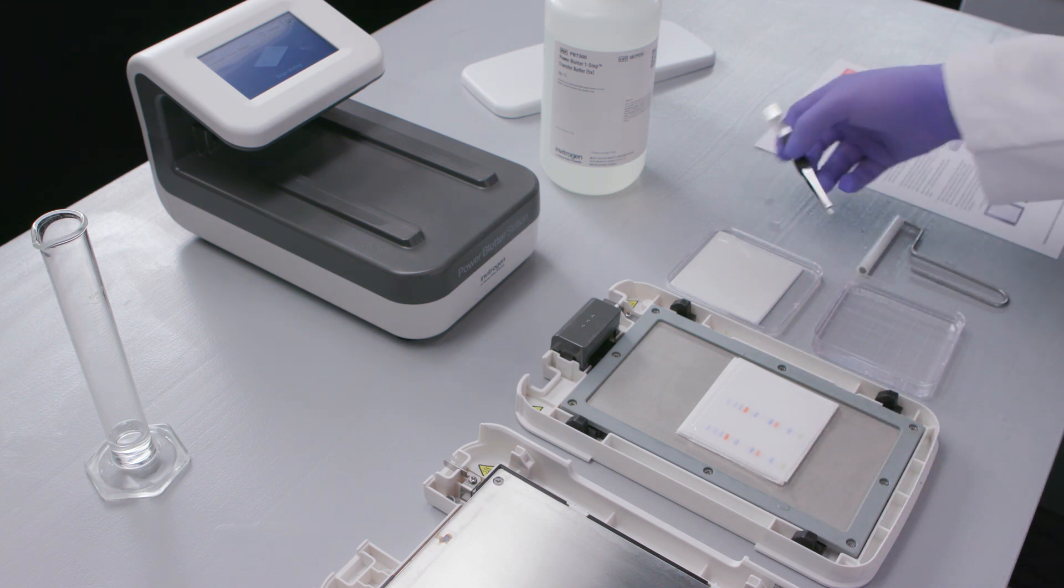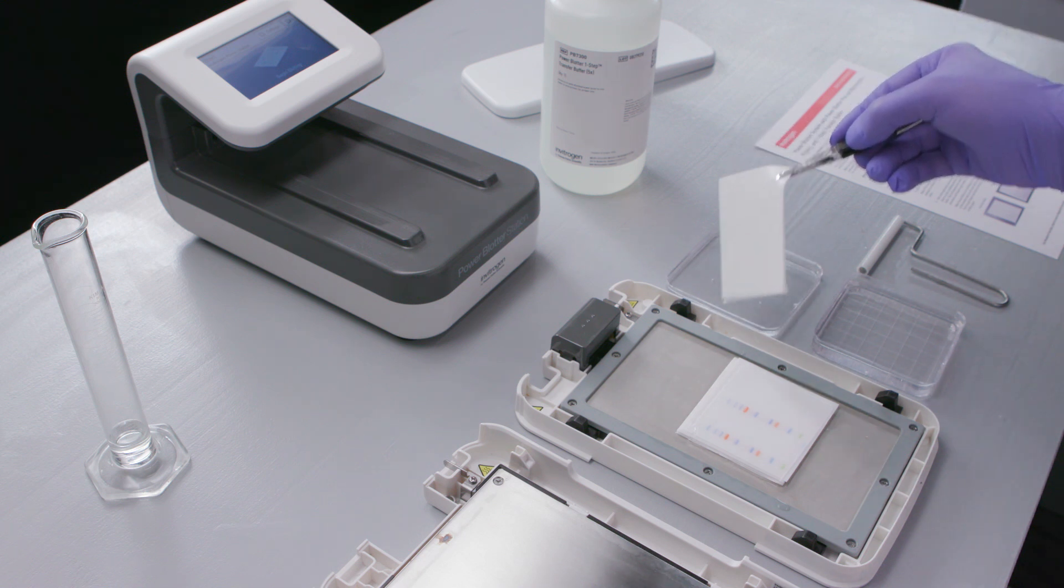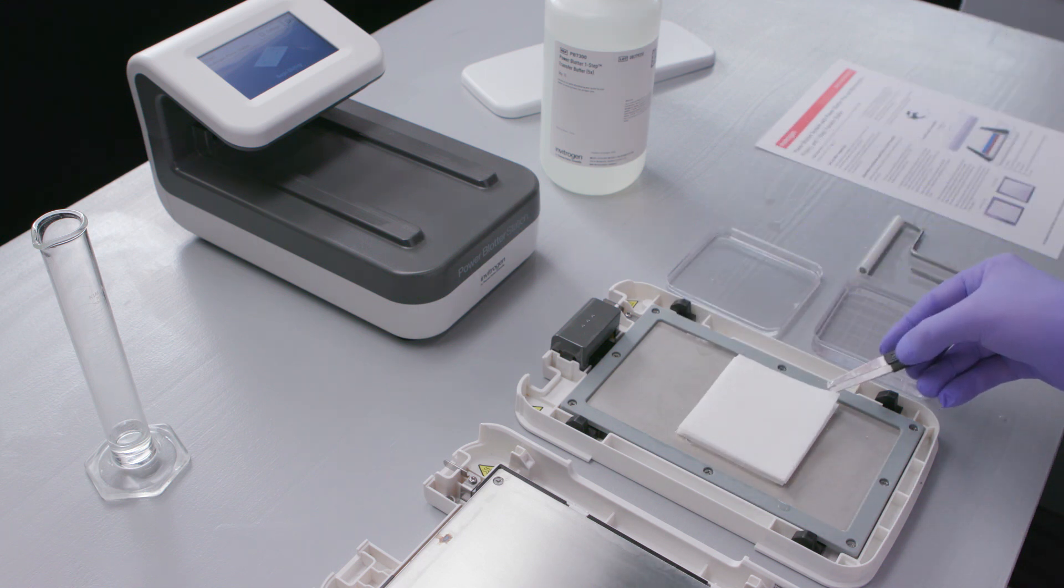Place the other two pre-wetted filter papers on top of the pre-run gel and use the blotting roller to remove any air bubbles from between the gel and the filter papers.